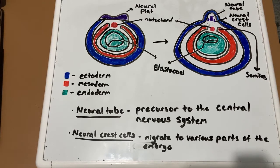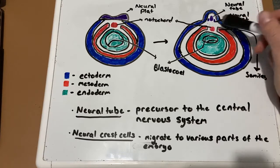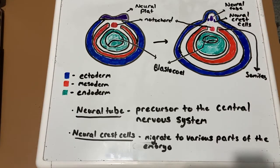Mesoderm cells lateral to the notochord separate into blocks called somites, which is seen right here. So you have these somites on both sides, and these cells convert to mesenchyme cells, which are migratory cells, and will move to new locations.